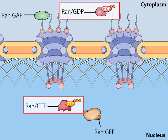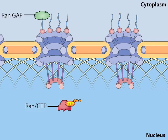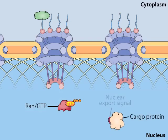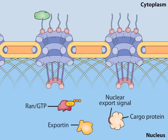Similar to imported proteins, proteins are targeted for export from the nucleus by specific amino acid sequences called nuclear export signals. Nuclear export signals are recognized by receptors within the nucleus called exportins, which direct protein transport through the nuclear pore complex to the cytoplasm.